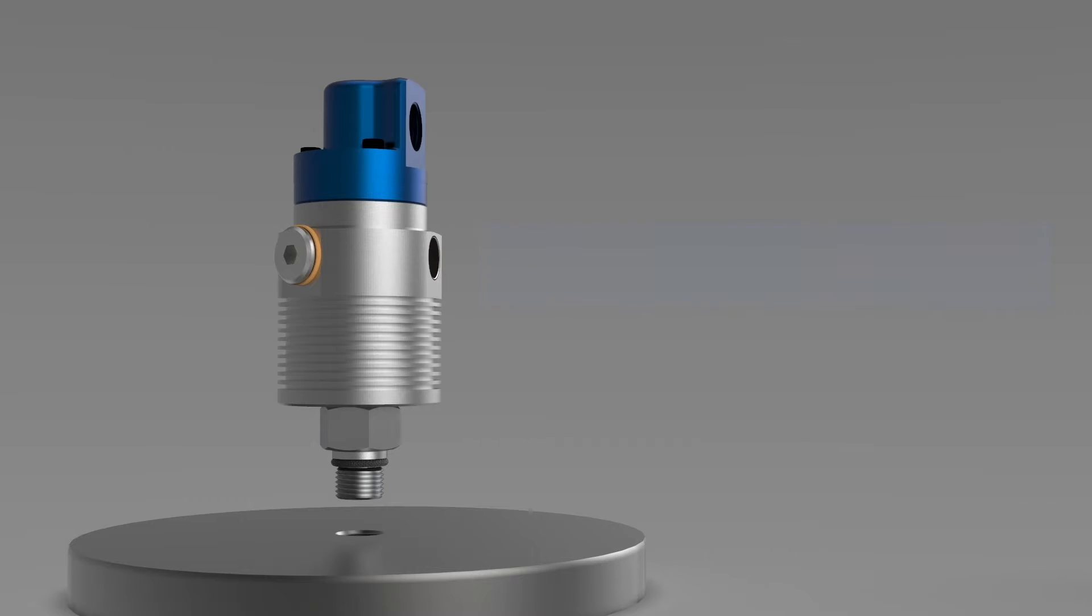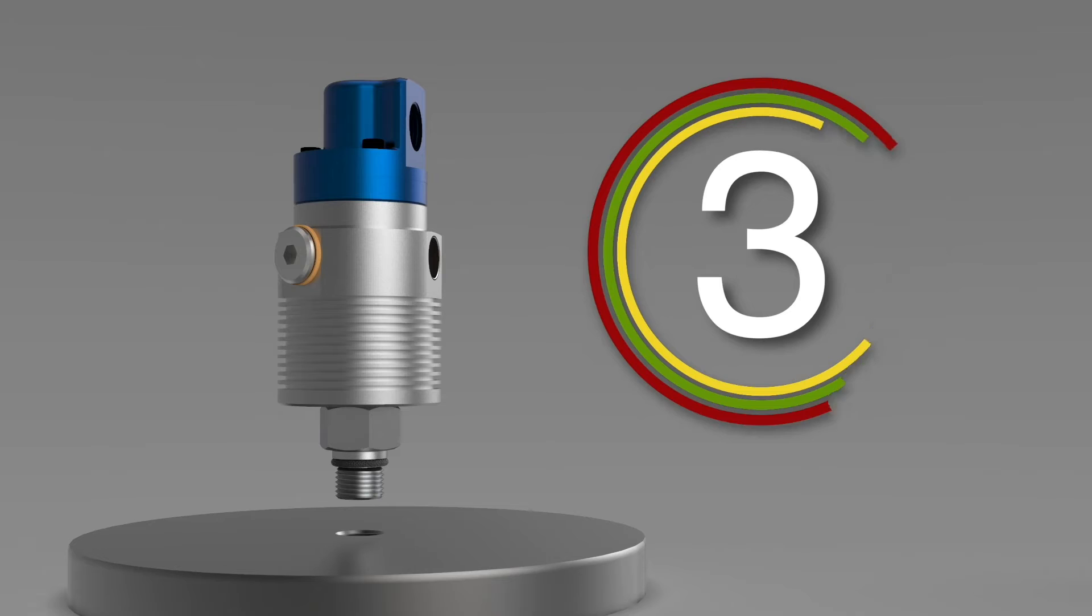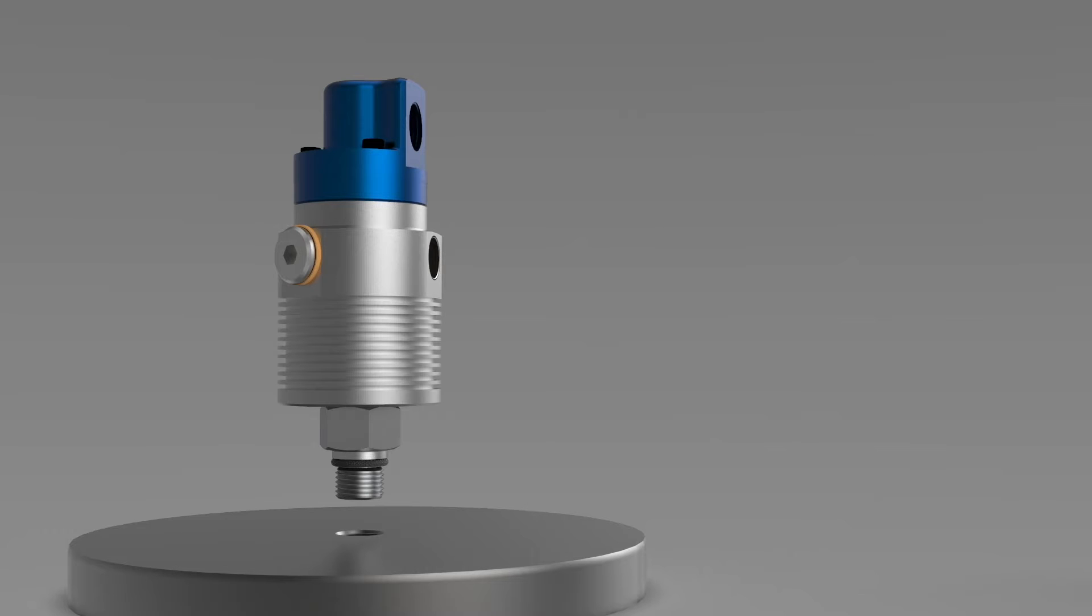The steps for installing a jubilant rotating union can be thought of as one, two, three. Step one: connect the supply hose to the union.